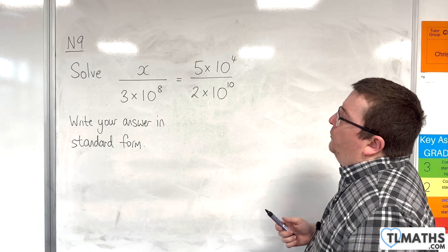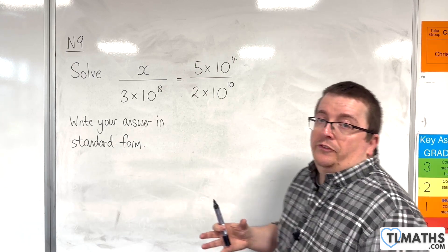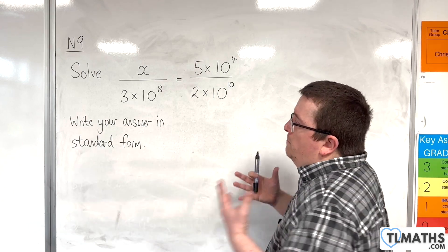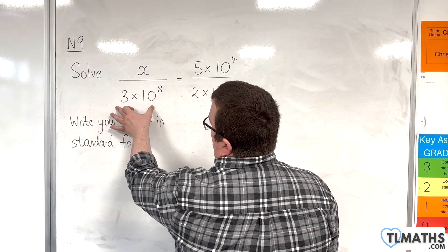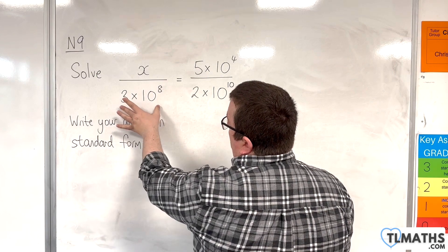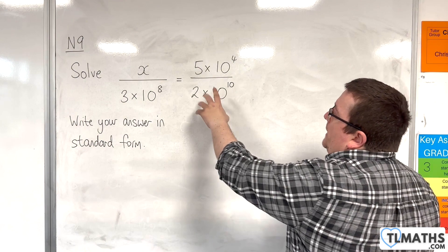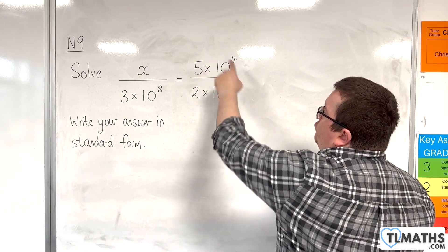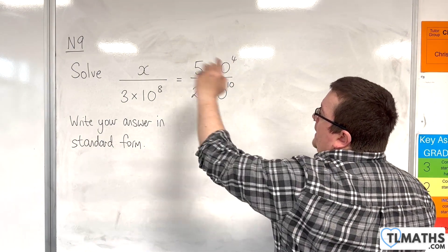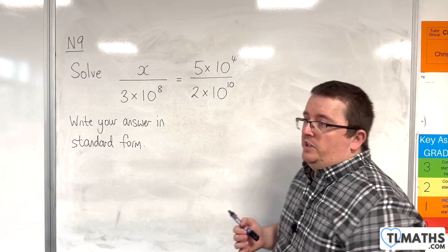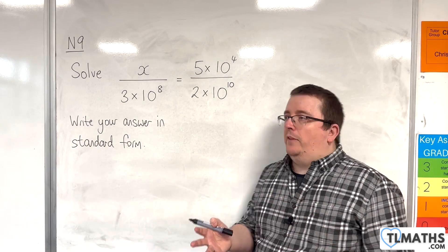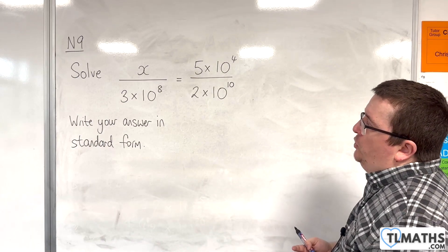So in order to do this, we've got two options as to step 1. Either you can multiply through both sides by the 3 times 10 to the 8 to isolate the x, or we can simplify the right hand side first and then multiply through by 3 times 10 to the 8. It doesn't really matter. It's really up to you as to which one you do first.